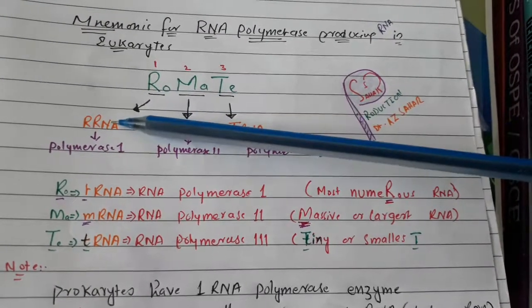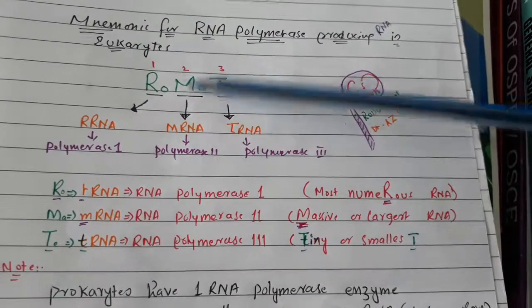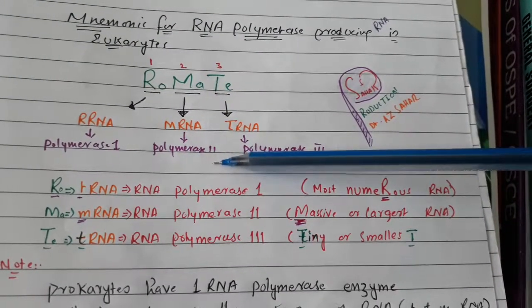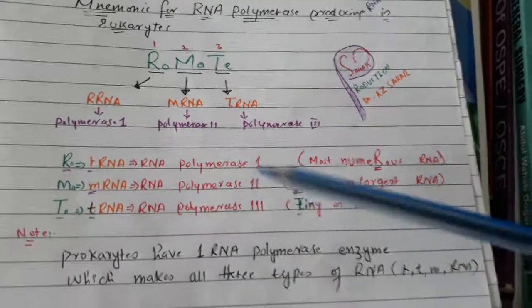R is for rRNA and one is for RNA polymerase 1. M is for mRNA and two, so RNA polymerase 2. T is for three, so it means tRNA RNA polymerase 3.